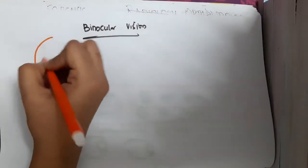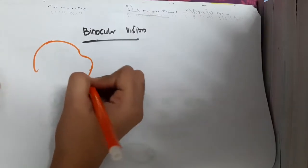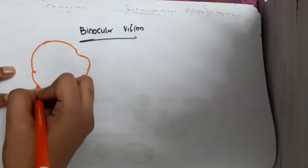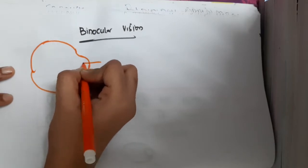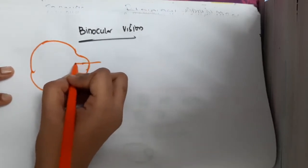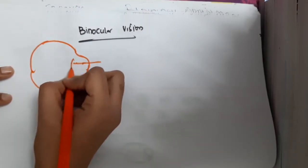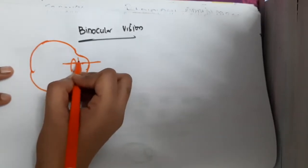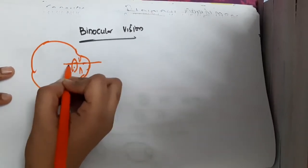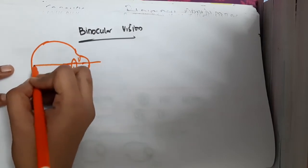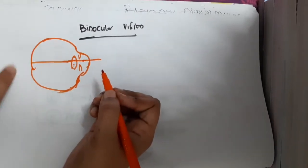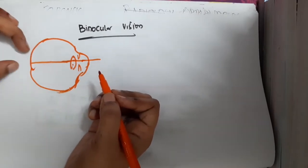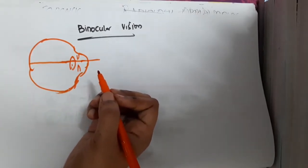What is binocular vision? When an object goes through the eye, it should cross the conjunctiva and cornea, then reach the aqueous humor, then go to the lens, cross the lens and go to the vitreous humor, and it will project onto the retina. When projected onto the retina, we will see the image.